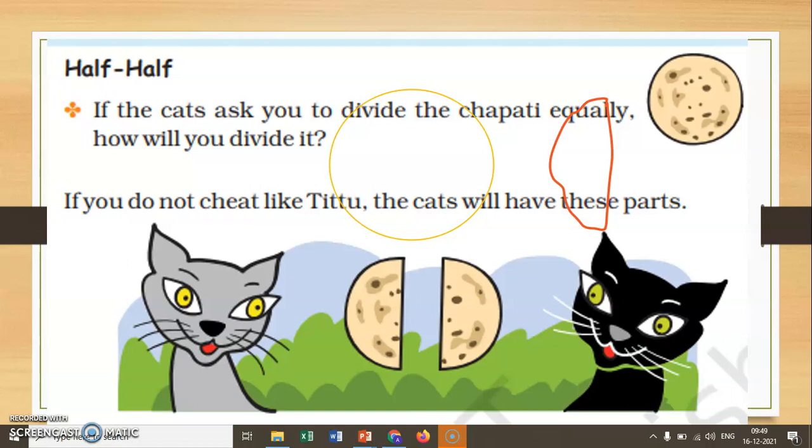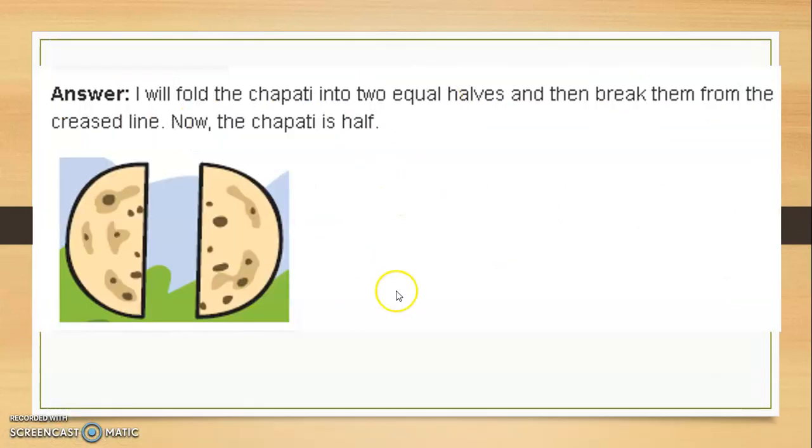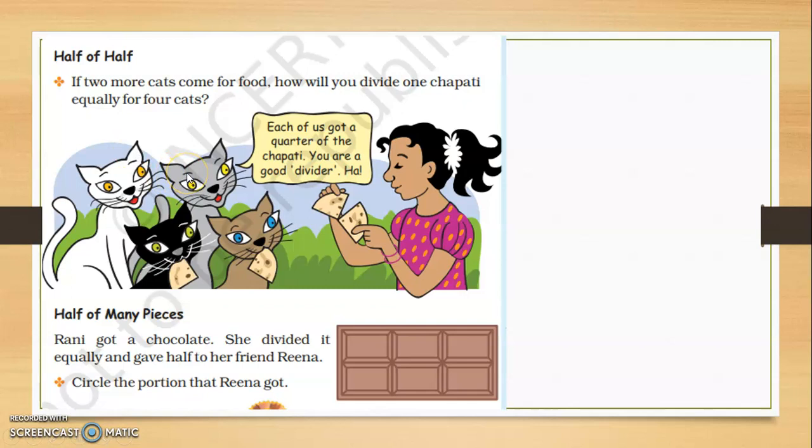If you do not cheat like Tittu, the cats will have these parts. If two more cats come for food, how will you divide one chapati equally for four cats?